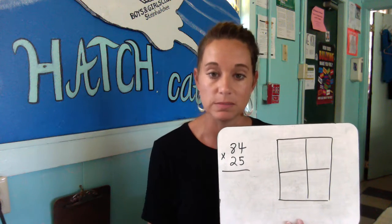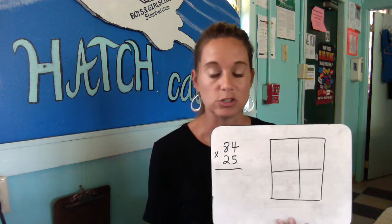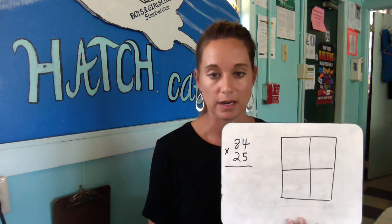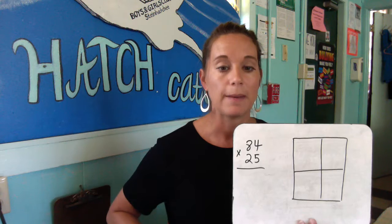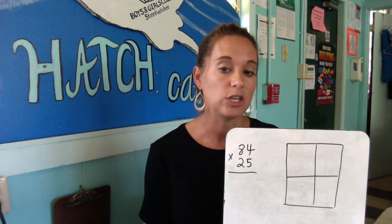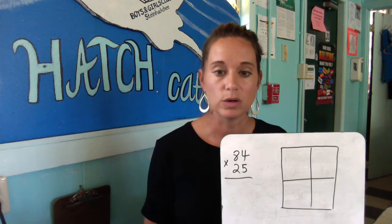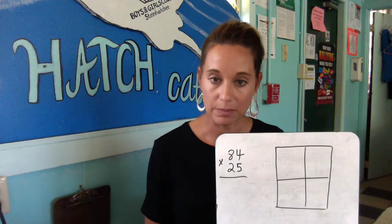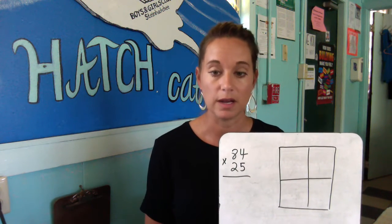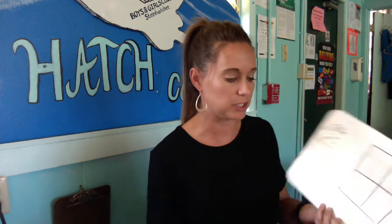This is called the box method of multiplication. They'll probably immediately draw these boxes and they're going to break apart that number. We talked previously about breaking apart a number — the box method uses place value in order to break apart a number and multiply parts of the numbers. The best way to do that is for me to just jump right in and show you the example.